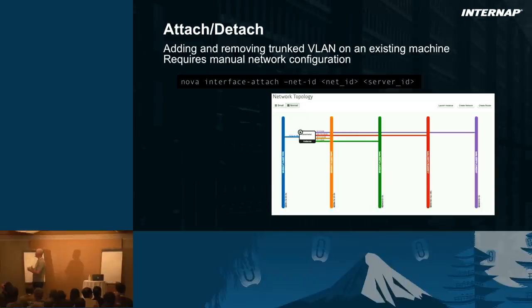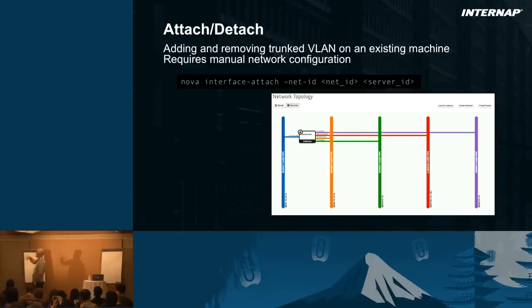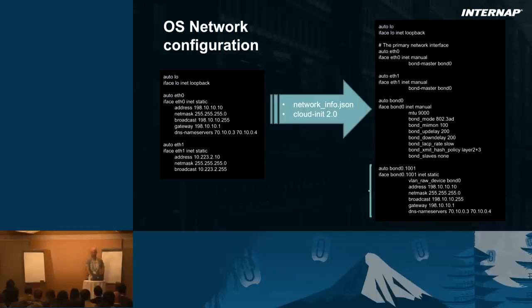At some point we're going to try to leverage Netman even more — maybe the ability to create a network, which would be even better. When you do this, Netman does its magic and a new line is added to the trunk. However, we don't have any agent on the operating system at Internap, so you'll have to modify the network configuration by hand and add a new bonding interface back in the server.